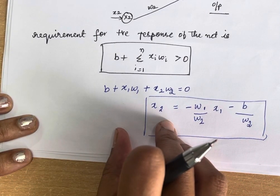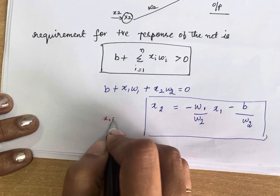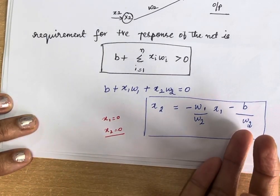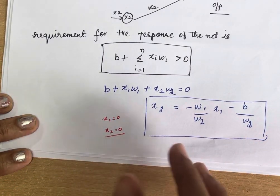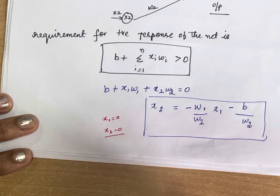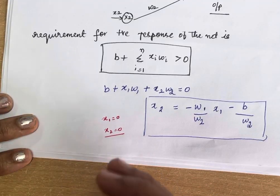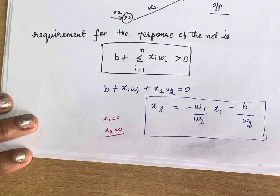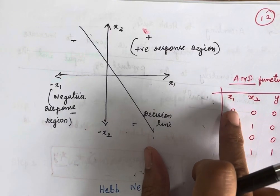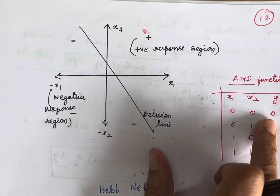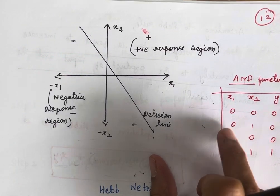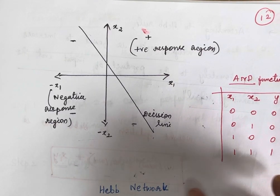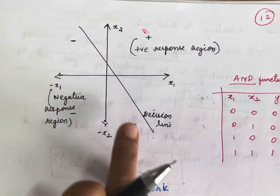Using this equation, when you substitute x1 = 0 you get an x2 value, and when you substitute x2 = 0 you get another point. Using these two points, you can draw the line on the graph. This is how you can draw a line and check whether the region separates the positive response from the negative response. So if you take an AND function — when both inputs are 0 the output is 0, when one input is 0 the output is also 0, and when both inputs are 1 you get 1. For this, you can easily draw a linear separable line.